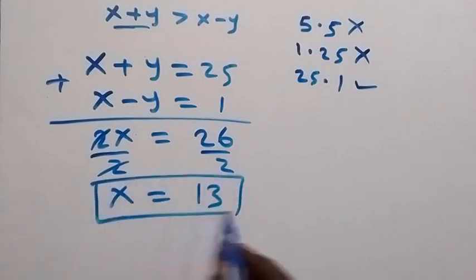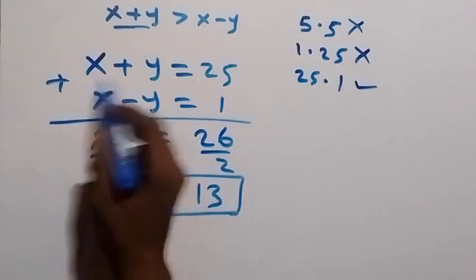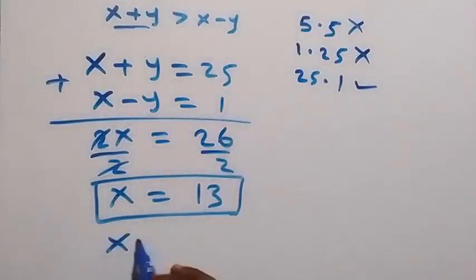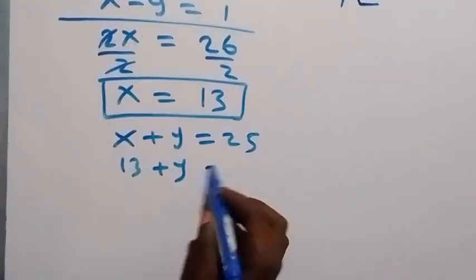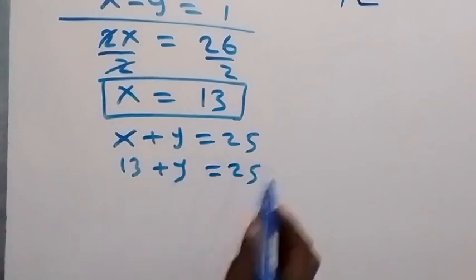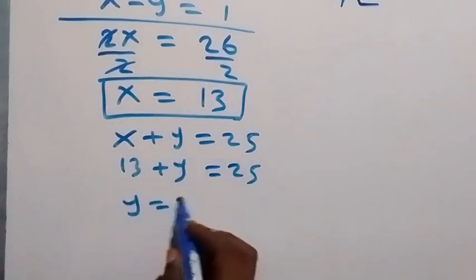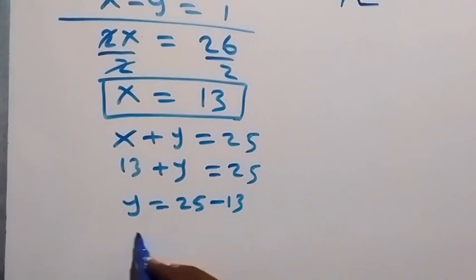Then to get y, we use one of these. That is x plus y equals to 25. Then x is 13 plus y which is equals to 25. Take 13 there, we have y is equals to 25 minus 13, and of course y here will be 12.